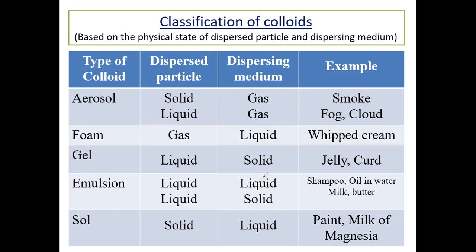Remember that when gas is the dispersion medium, the colloid is called an aerosol. Aerosols are two types: solid plus gas, and liquid plus gas. When gas is the dispersed particle, the colloid is called foam — two types: gas plus solid, or gas plus liquid. When liquid is the dispersed particle, the colloid is called gel or emulsion: liquid plus solid equals gel, and liquid plus liquid equals emulsion. When solid is the dispersed particle, it is called sol — for example, metal alloy or colored glass for solid sol, and gold sol or milk of magnesium for solid plus liquid sol.